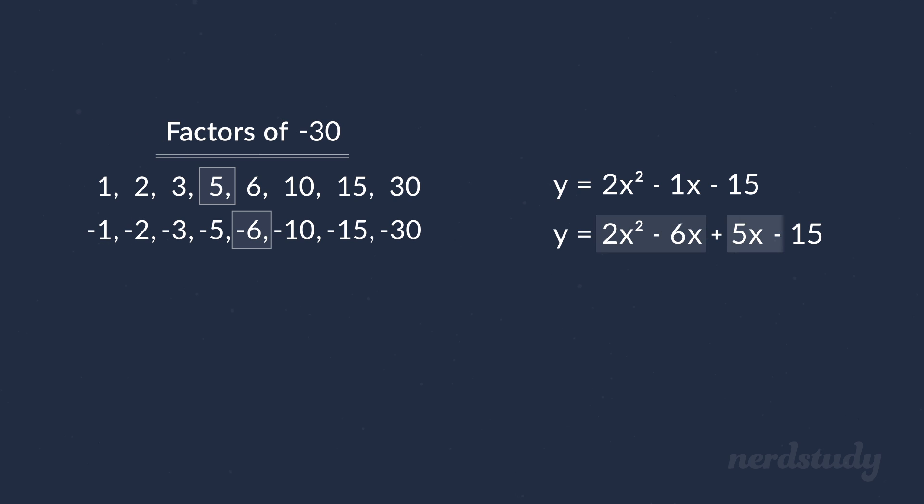So if we do one segment at a time and factor this, we would get 2x times x minus 3 and 5 times x minus 3 for this. Now if we factor out the x minus 3 in the same way that we did for the last example, then we would get the final answer of y equals x minus 3 times 2x plus 5.